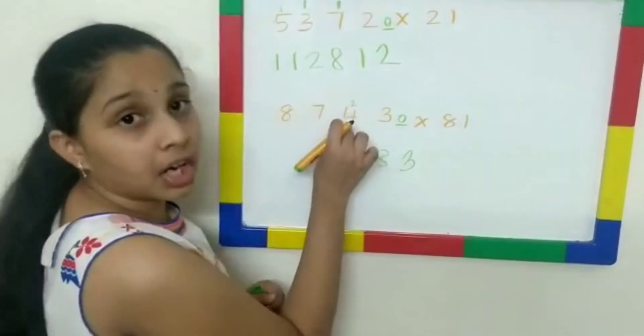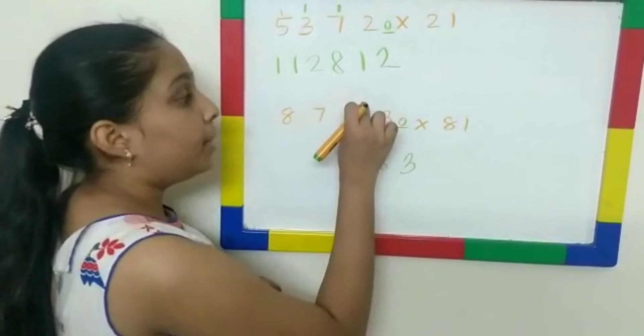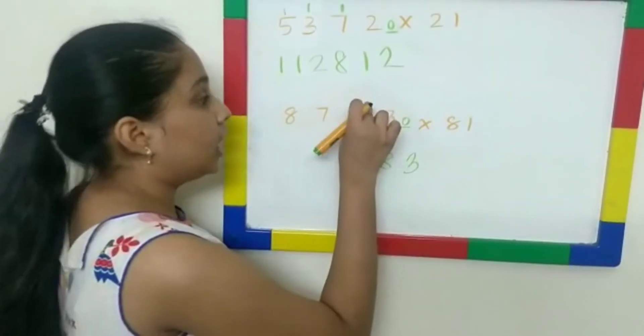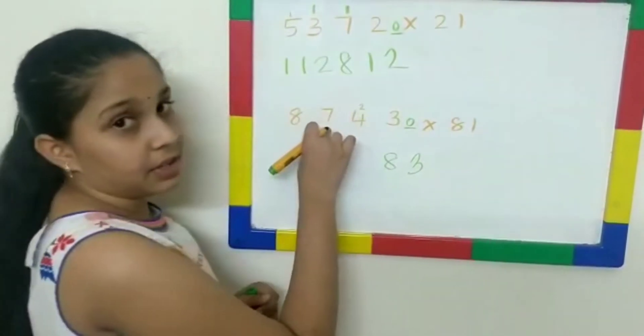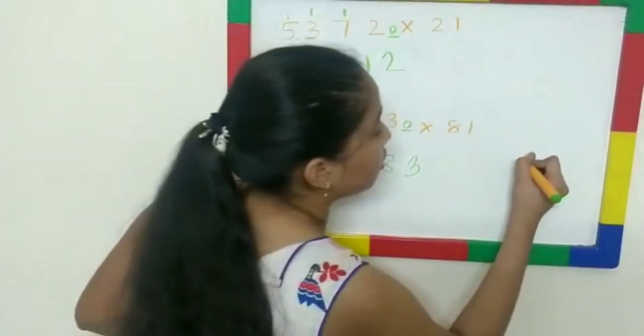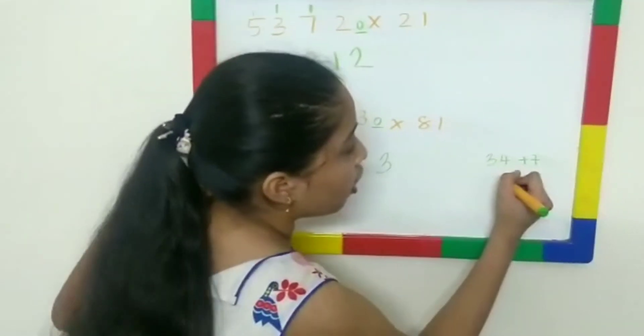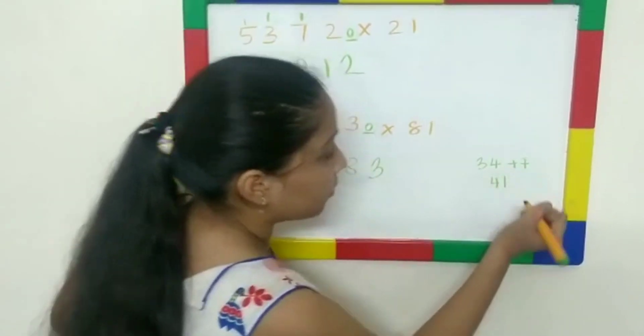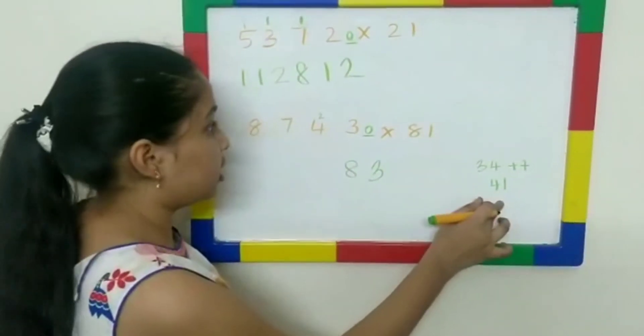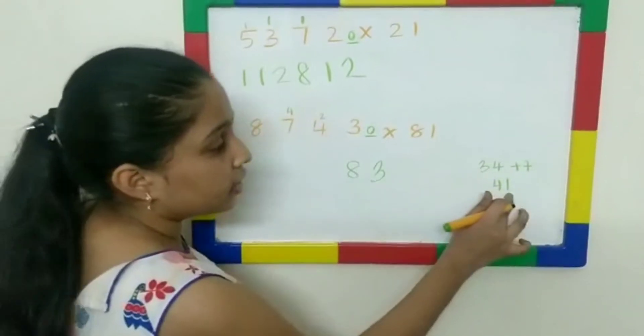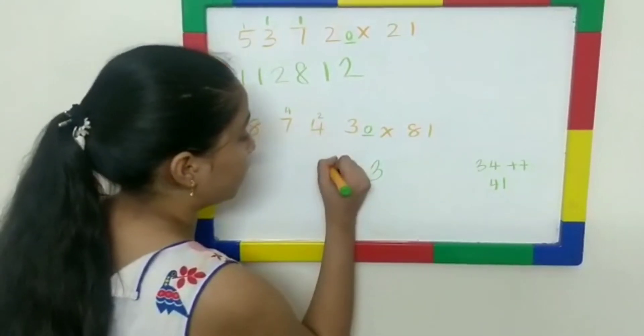8 into 4 gives 32. 32 plus 2 is 34. 34 plus 7. It's a big number. We should write it down. 34 plus 7 gives 41. So, now, this 4 is in the 10th place. 4 goes on top. And this 1 over here goes 1 down.